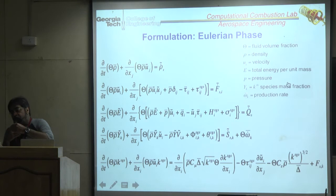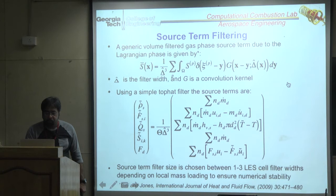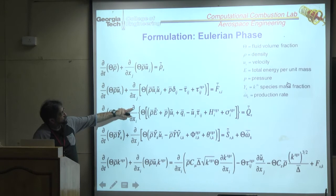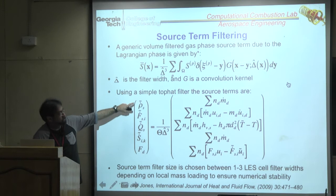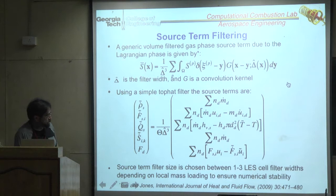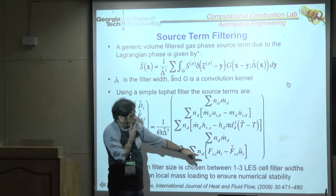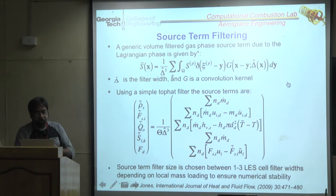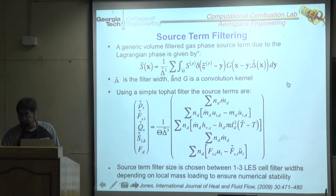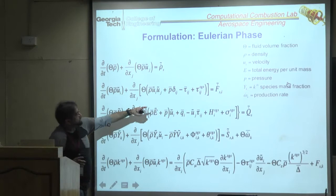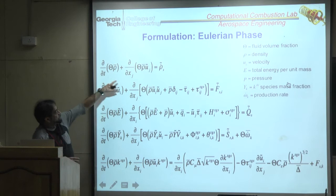Moving to spray: in LES, source terms require volume averaging to enter the LES equations. A key problem: if dense liquid droplets all evaporate in one cell — 100 particles at kerosene density 800:1 — the source term becomes enormous, violating the CFL criteria and causing numerical instability.